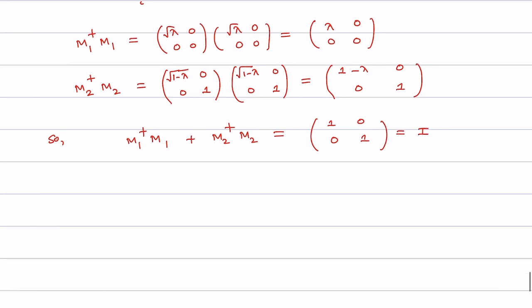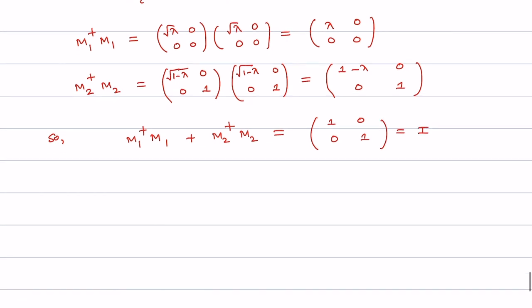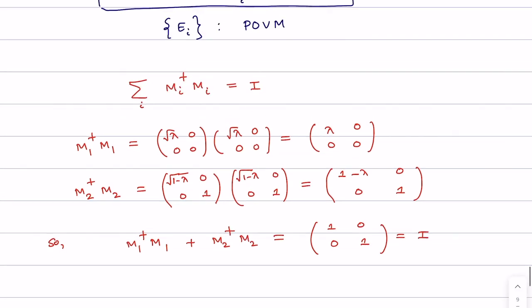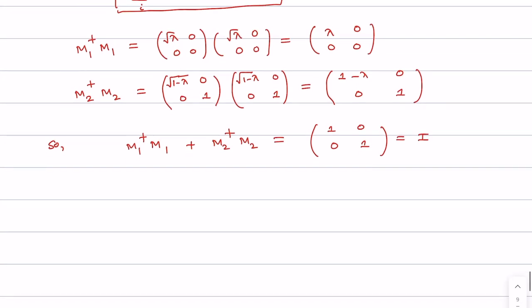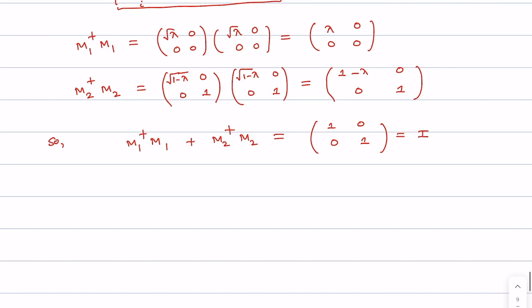Adding M1†M1 + M2†M2 gives [[1,0],[0,1]], which is the identity matrix. Therefore M1 and M2 satisfy the required property and qualify as measurement operators for a qubit, since they are 2×2 matrices.